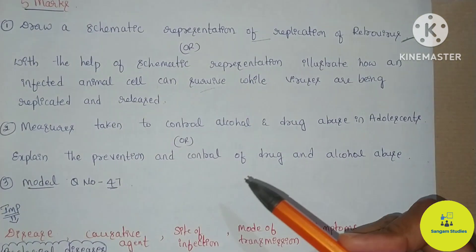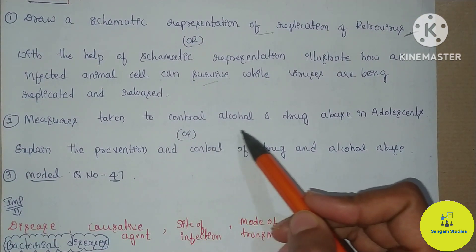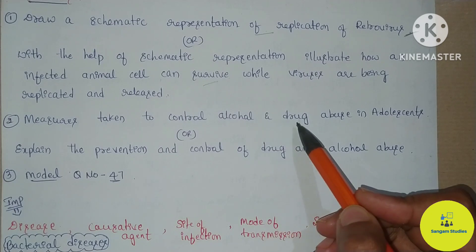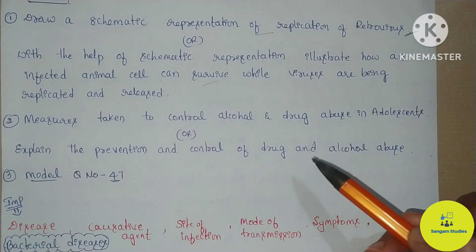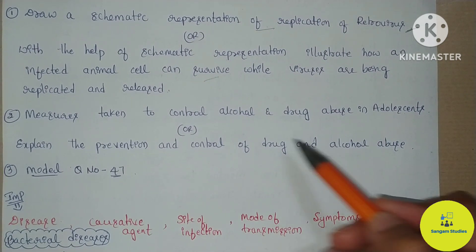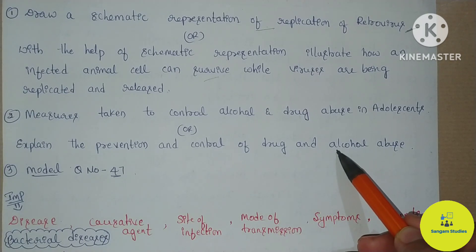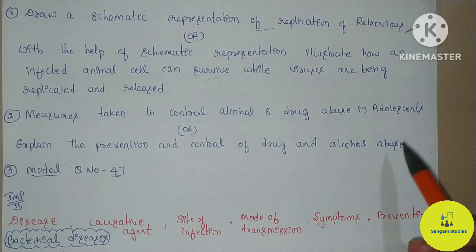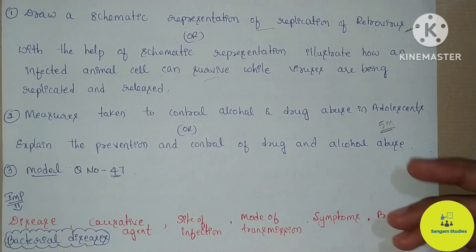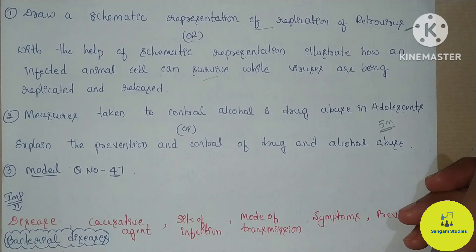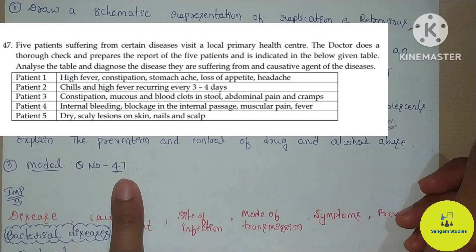Next 5-mark important question: measures taken to control alcohol and drug abuse in adolescence. This question is about prevention and control of drug and alcohol abuse. This is also a 5-mark important question. If you're unsure, check it out on the screen.